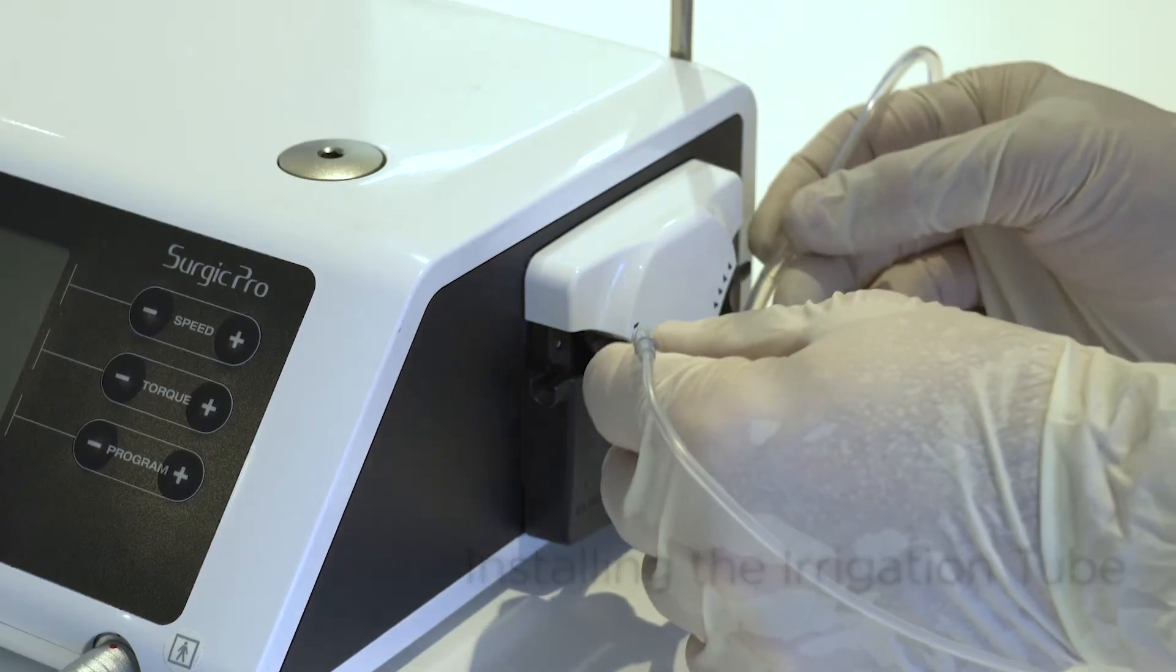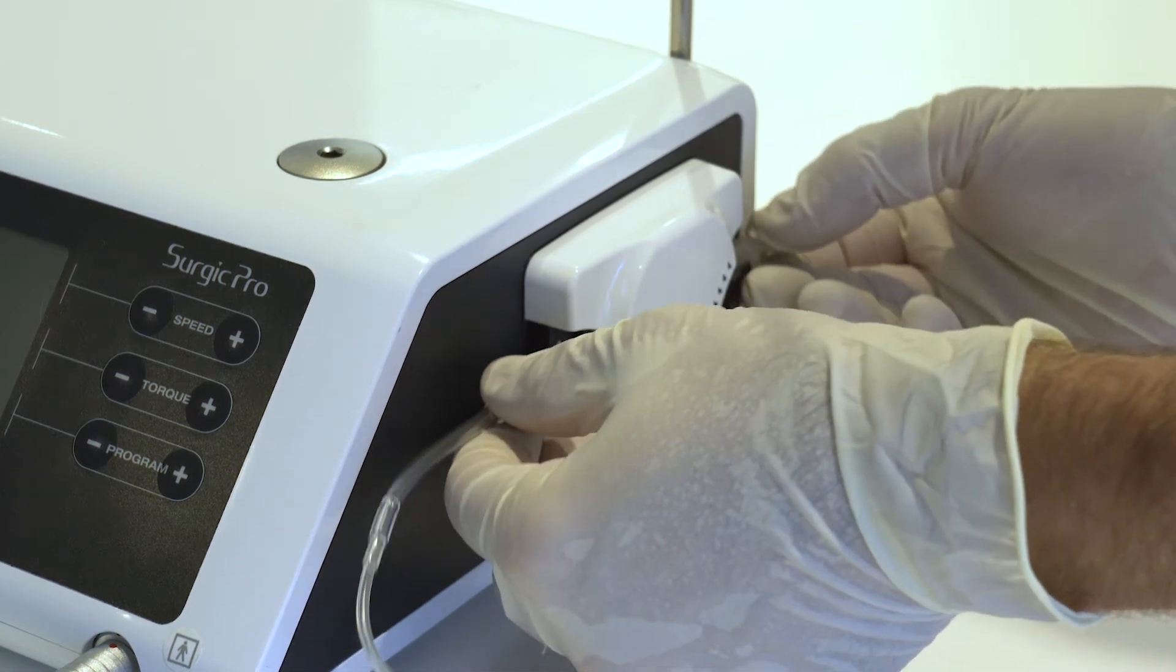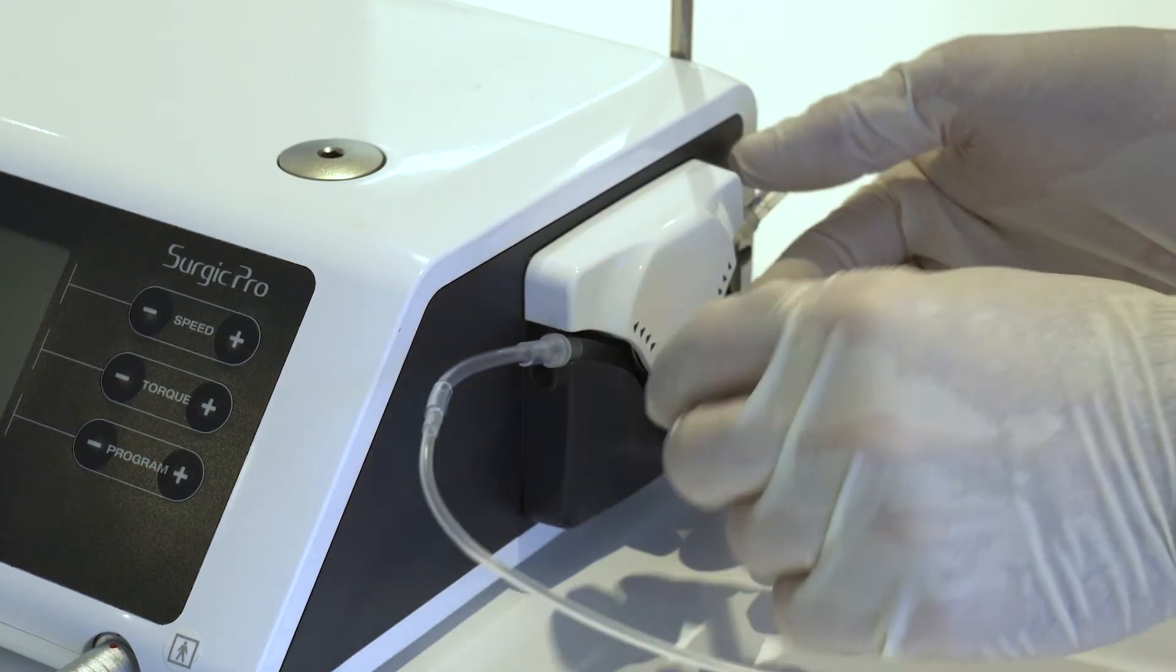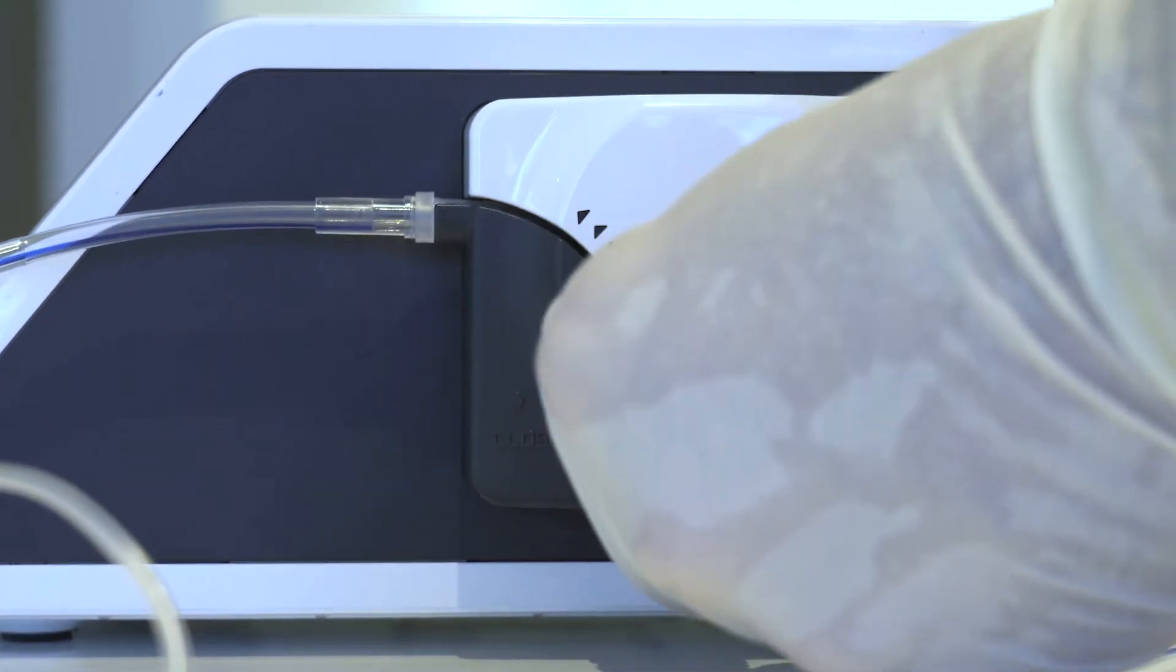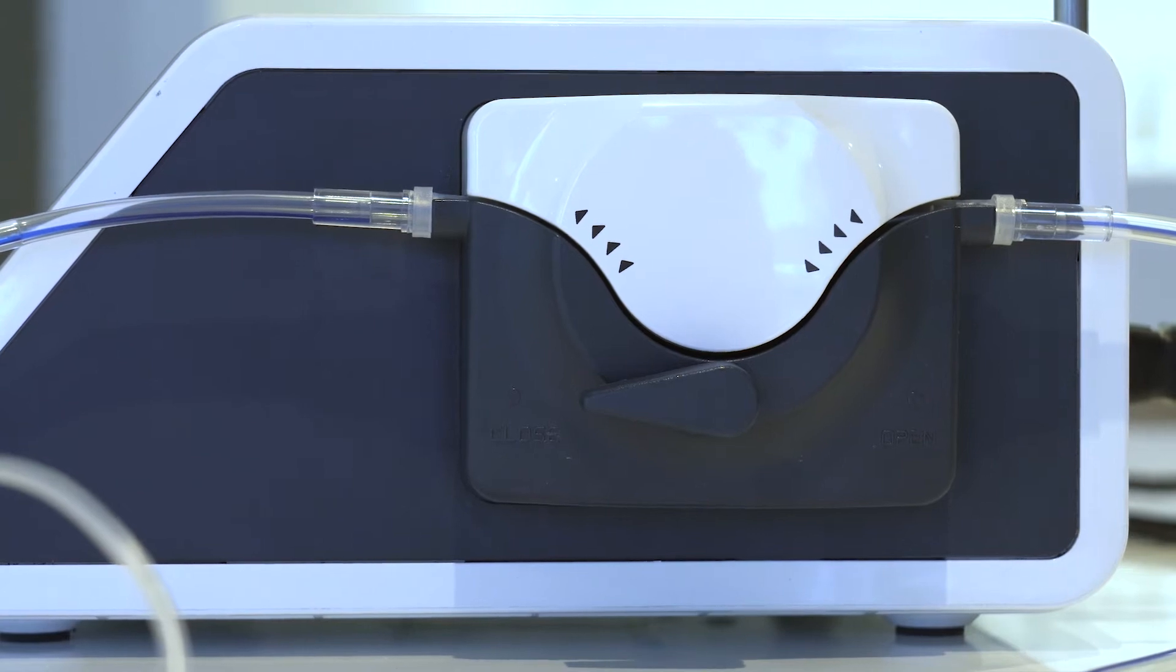Position the stoppers of the tube assembly in the tube guide securely. After the tubes are correctly positioned, close the pump cover by turning the pump cover lever to the closed position, 180 degrees counterclockwise.